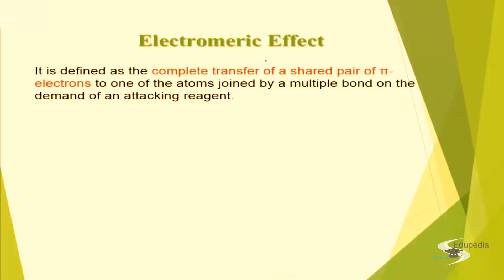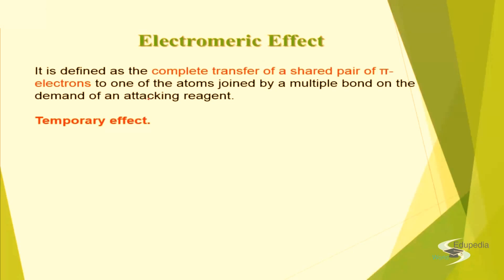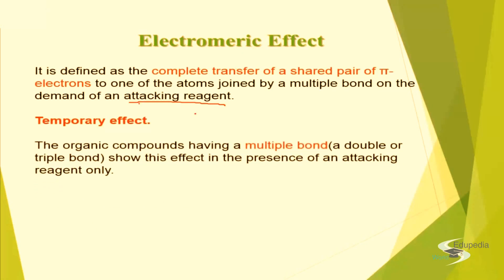Electromeric effect is a temporary effect, and it is defined as the complete transfer of shared pair of pi electrons to one of the atoms joined by a multiple bond, when an attacking reactant approaches that molecule. This is a temporary effect because of the approaching attacking reagent, and this is also the complete transfer of shared pair of pi electrons. This will take place only in the presence of an attacking reagent. If the reagent is removed, then there is no such polarization.